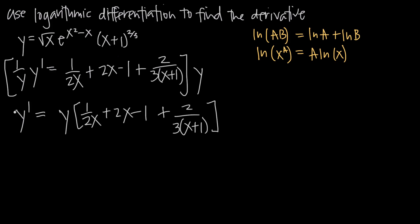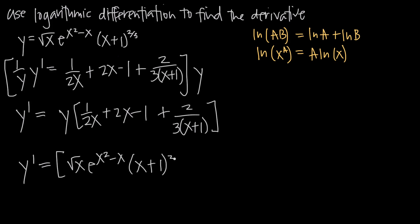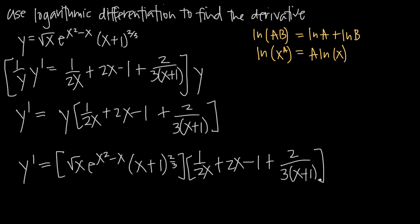Because we want the derivative in terms of x only, we substitute the original function in for y. Our final answer for y prime, or dy over dx, is the square root of x times e to the x squared minus x times quantity x plus 1 to the 2 thirds power, all multiplied by 1 over 2x plus 2x minus 1 plus 2 over 3 times quantity x plus 1. That's how you use logarithmic differentiation to find the derivative of a function like this one.